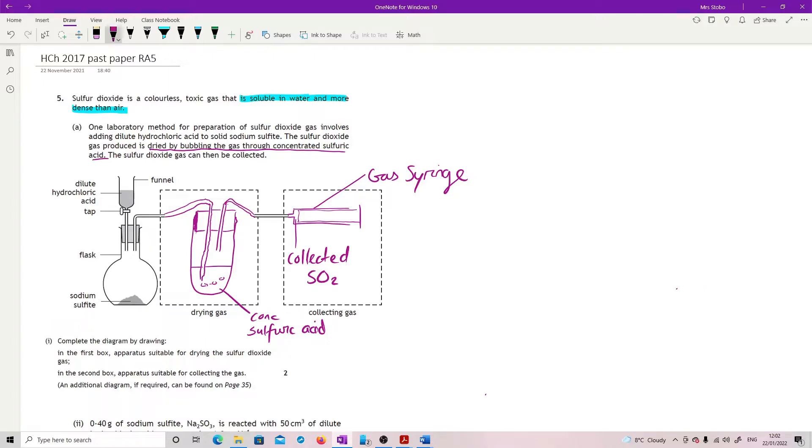Otherwise, the only way you can do it is by upward displacement of air because it's more dense. So that means that you need to have some kind of collection vessel. And we need to have a tube that is coming in here and the gas is then displacing the air out. You can't do downward displacement of water and you can't do downward displacement of air. So I would say gas syringe is your best one to do.